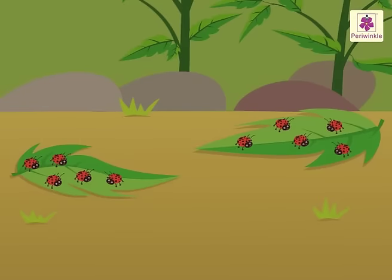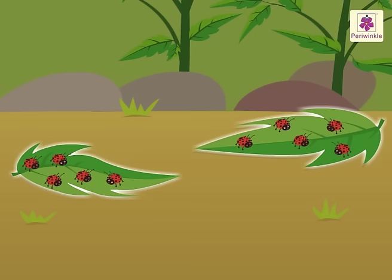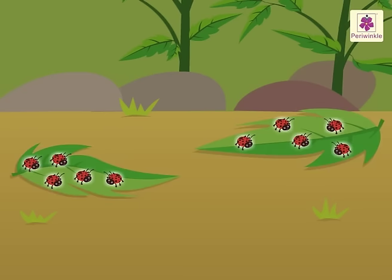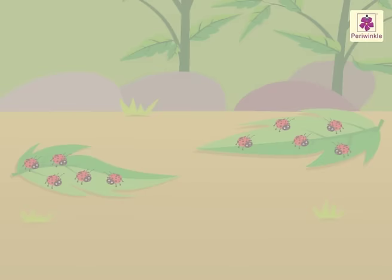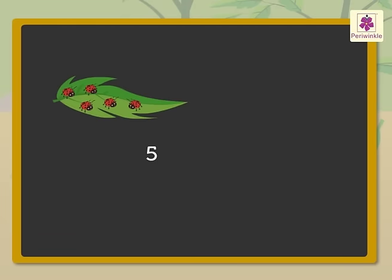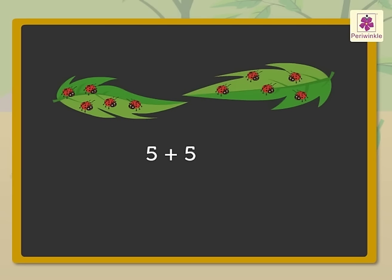Let us look at one more example. There are two leaves. There are five ladybirds on each leaf. How many ladybirds are there in all? Here, by adding, we get 5 plus 5 is equal to 10. And by multiplying, we get 5 multiplied by 2 is 10. Hence, there are 10 ladybirds in all.